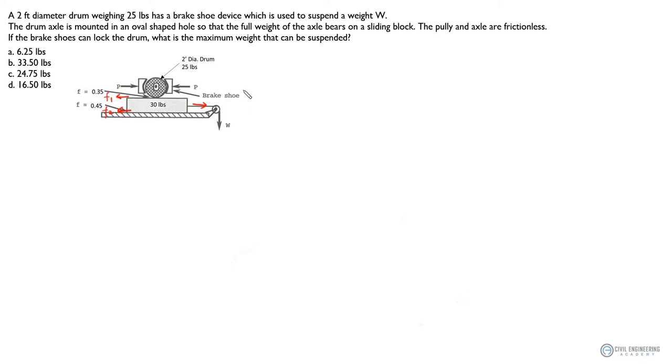The sequence to determine the maximum weight we can suspend is by creating several free body diagrams. First of all, we start from top to bottom. First, you will have a free body diagram at the interface of the drum and this surface of the block. So the drum is right here, and this is your block.